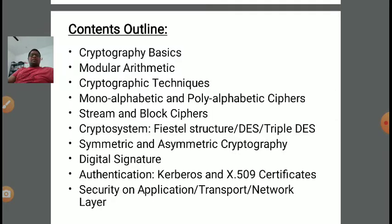Then we discussed some basic cryptographic techniques like substitution type of technique and transposition type of technique. In transposition, we discussed the rail fence technique and columnar technique. After that, we discussed mono-alphabetic and poly-alphabetic ciphers. Various types of ciphers we discussed include: additive cipher, multiplicative cipher, affine cipher, Vigenère cipher, Playfair cipher, and Hill's cipher. All these concepts were discussed in the previous lecture.